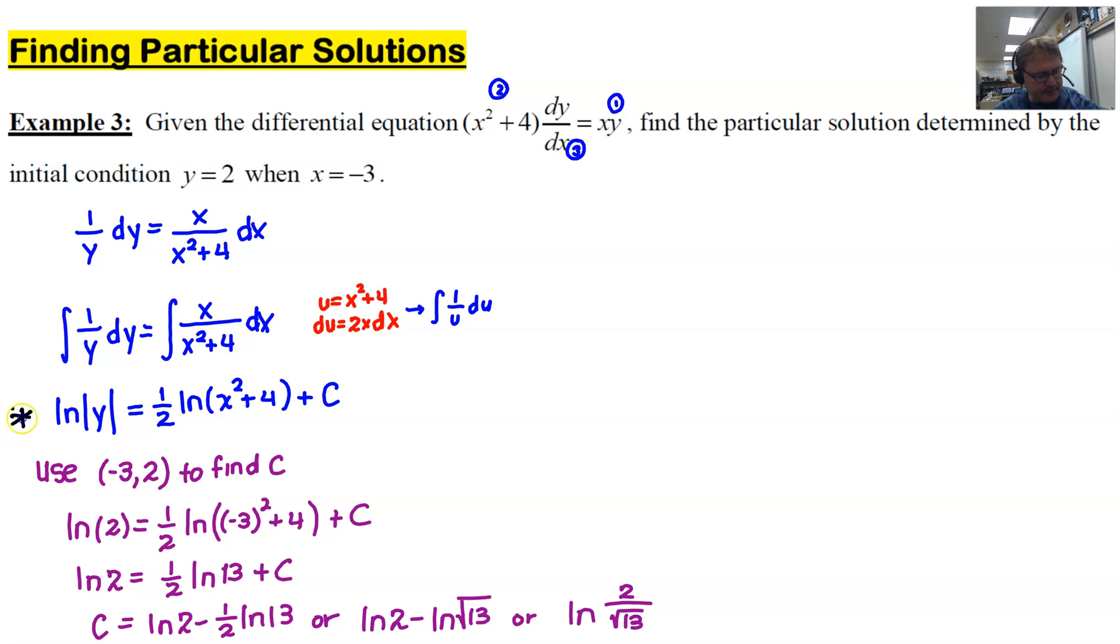We're going to return to this step. The natural log of the absolute value of y is ½ times the natural log of x² + 4, and then that c is going to be added. And I think at this point I'm going to make the call. Let's write it as the most concise possibility, which is the natural log of the 2 over square root of 13.